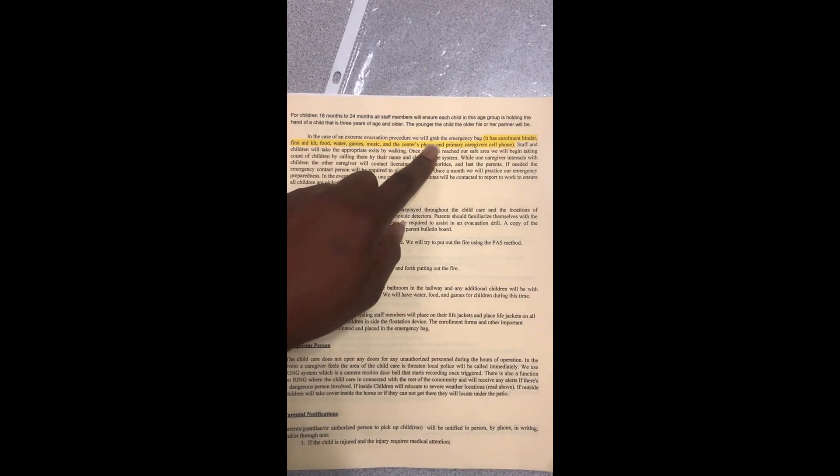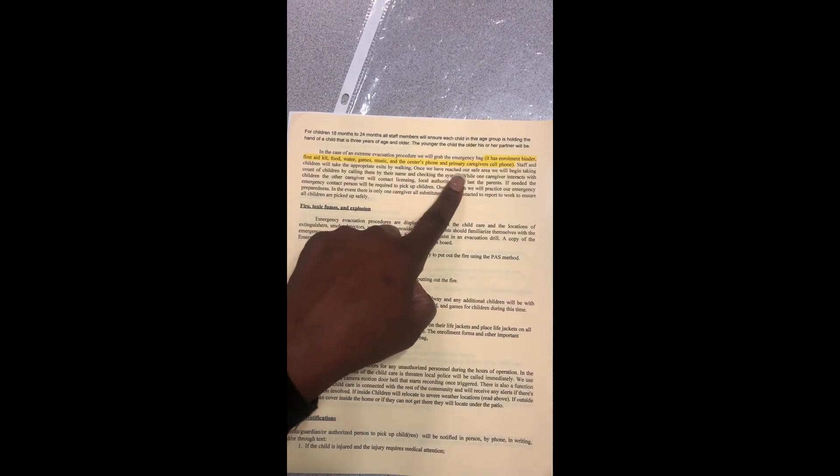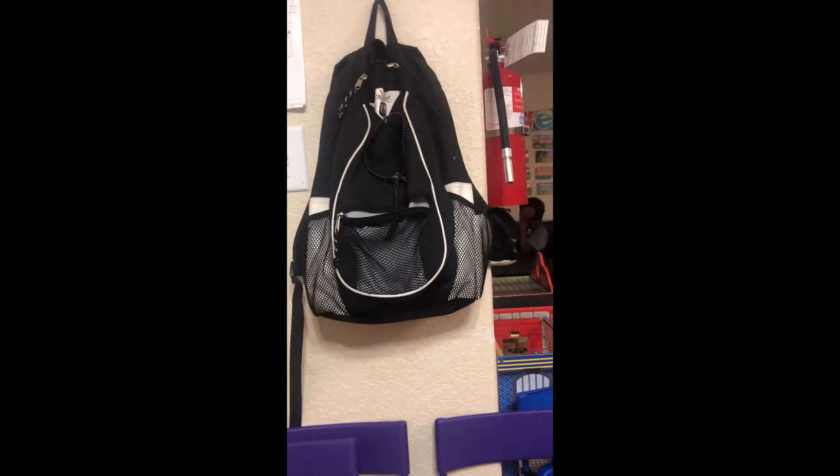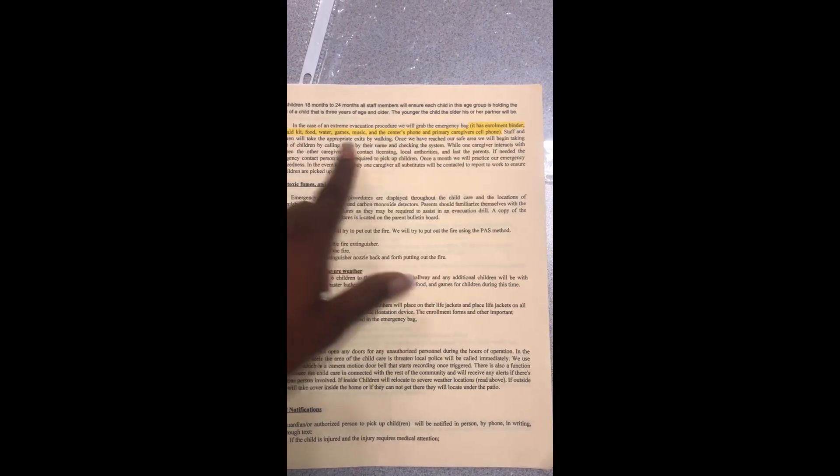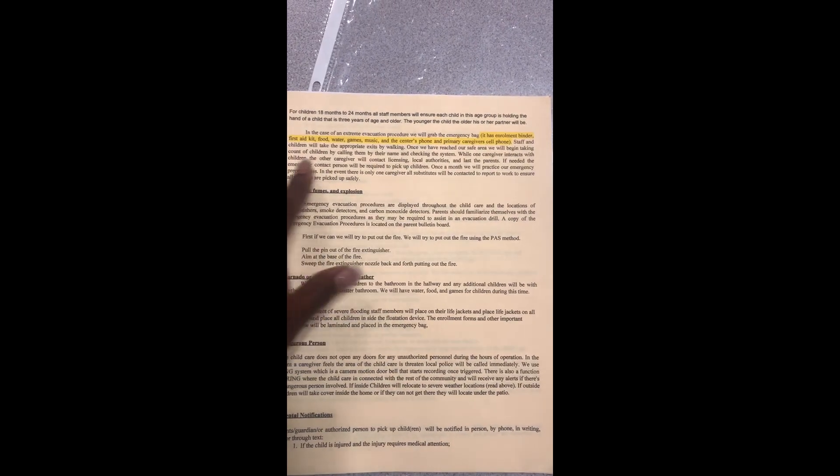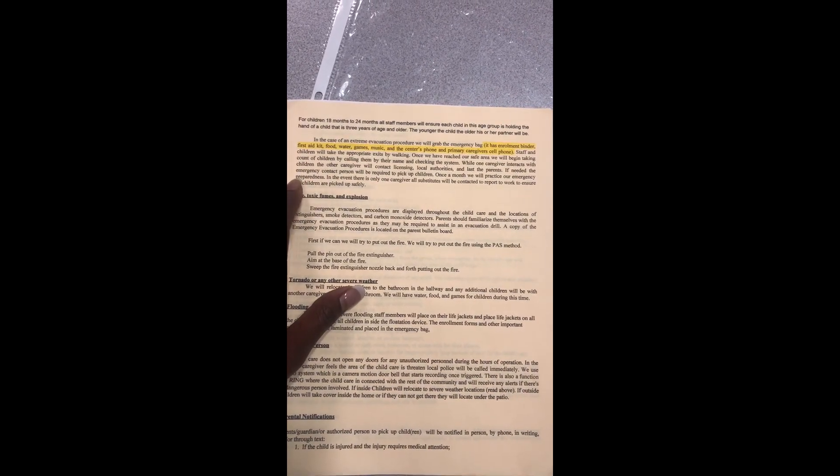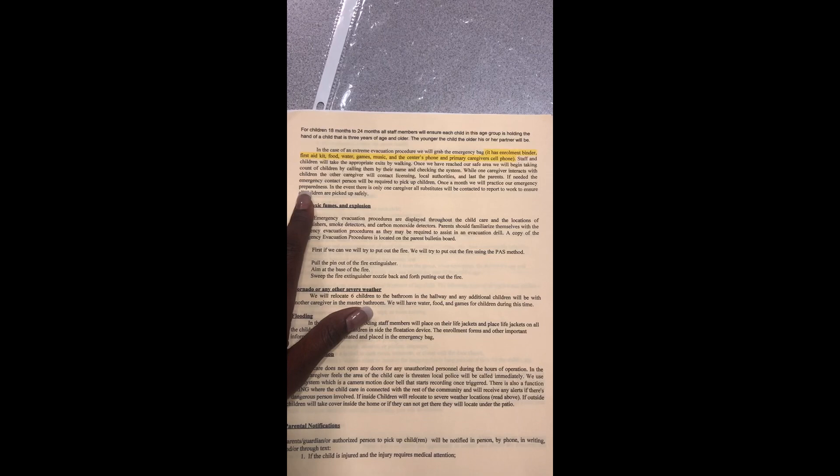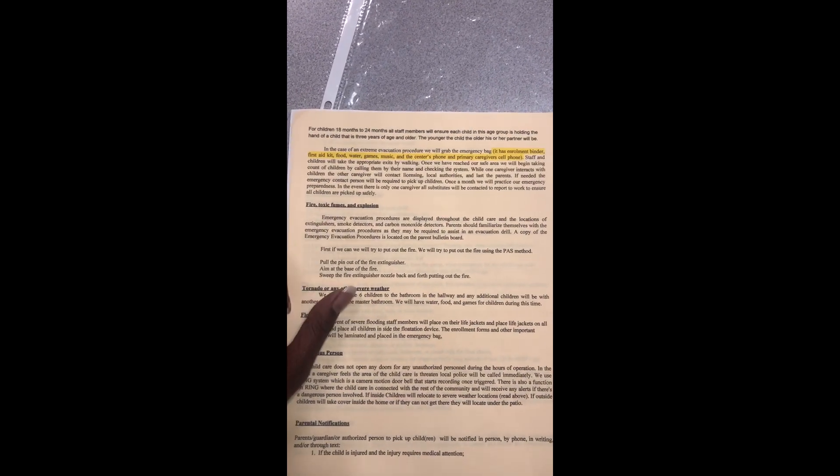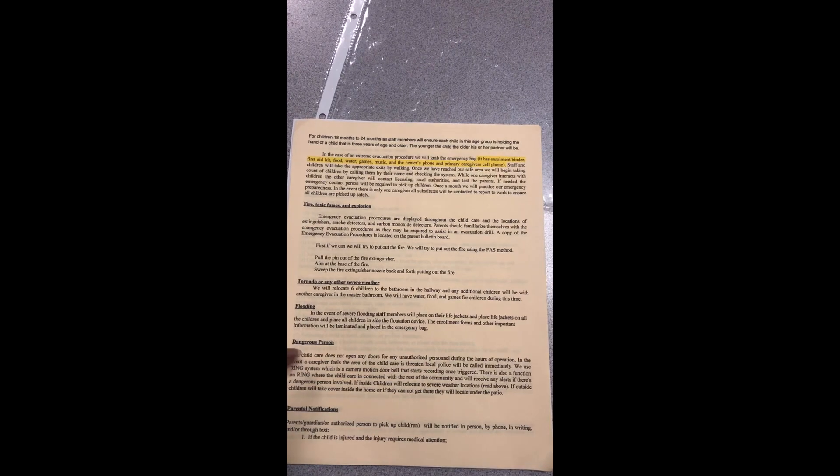In the case of an extreme evacuation procedure, we will grab the emergency bag, enrollment binder, first aid kit, food, water, games, music, and the center's phone and primary caregiver cell phone. Everything is inside of there. Staff and children will take their appropriate exits by walking. Once we have reached our safe area, we'll begin to take count of the children by calling them by their names and checking them in the system. While one caregiver interacts with the children, the other caregiver will contact licensing, local authorities, and parents. If needed, the emergency contact person will be required to pick up children. Once a month, we will practice our emergency preparedness plan. In the event there is only one caregiver, all substitutes will be contacted to report to work to ensure all children are picked up safely. And then it talks about fire and what we do for fire, tornado, what we do for tornado, flooding, and a dangerous person.